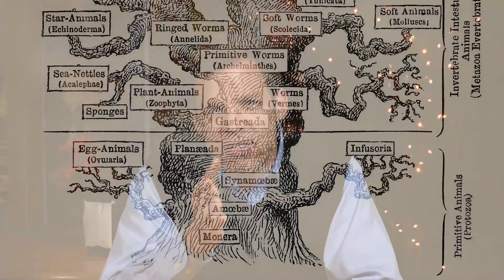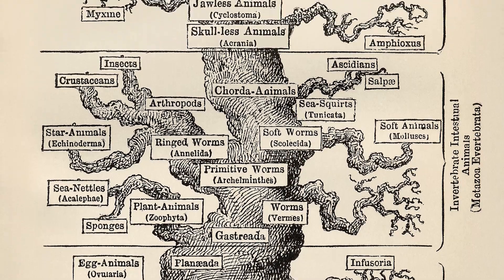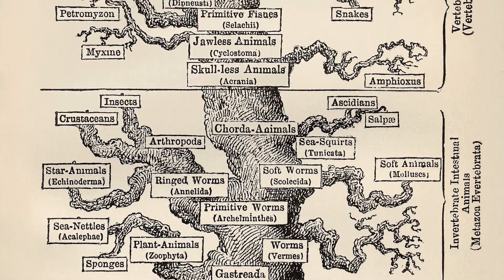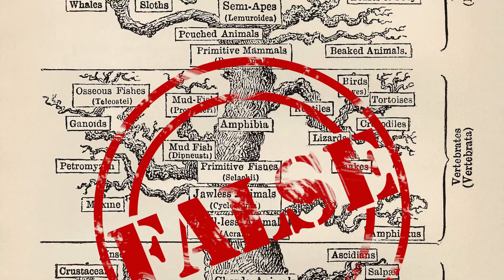When they started investigating further, it seemed that Dr. Haeckel had not only been inaccurate, but he'd been dishonest. He was proven to be wrong in the 1880s, and his idea about humans going through their evolutionary family tree as embryos was shown to be completely false in the 1880s.